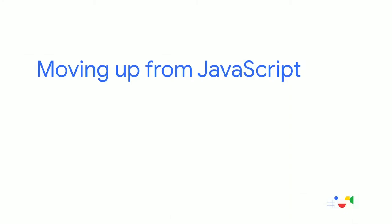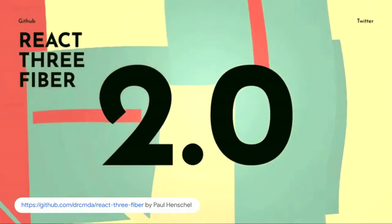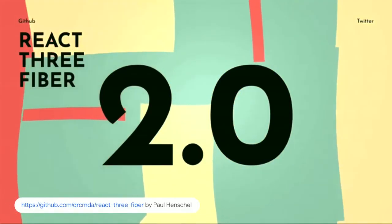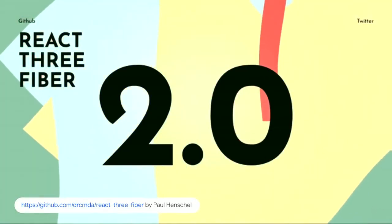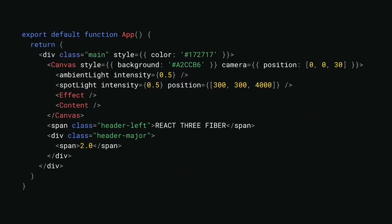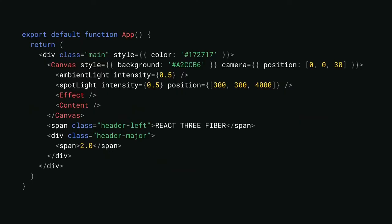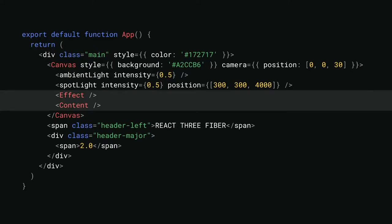But it still requires the developer to dive into JavaScript, which can be a little tedious to connect all the parts. If you're more used to React, this new library by Paul Henschel can be a great option — React Three Fiber mixes React concepts on top of Three.js abstraction. Notice how the previously defined effect and content components are easily composed into the canvas, making the code much more reusable and easy to maintain. However, I think we can still make it even simpler.